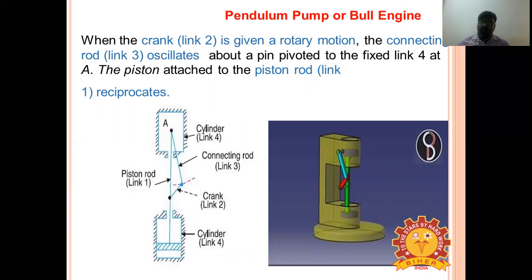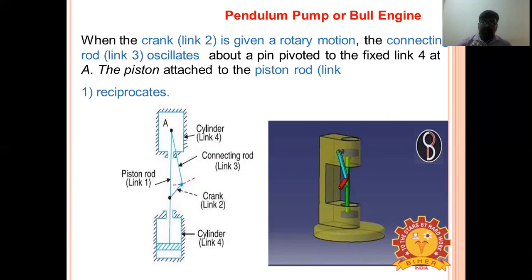The bull engine (pendulum pump) is another inversion: when the crank is given rotary motion, the connecting rod oscillates about a pin pivoted to the fixed link. The piston attached to the piston rod has a possible movement. This mechanism is used to supply feed water to boilers.